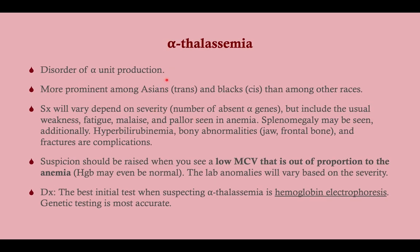For alpha-thalassemia, if you're taking Step 1, you should know the difference between cis and trans, which has to do with the locus of the mutations. Trans is more common in Asians; cis is more common in Blacks. Again, that's Step 1 material.